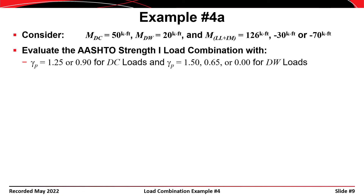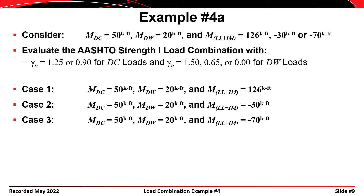Consider this example. The moment due to DC loading at a point is 50 kip-feet, and the moment due to DW loading at the same point is 20 kip-feet. The moment due to live load plus impact could be 126, negative 30, or negative 70 kip-feet depending on the truck position. We evaluate the AASHTO Strength I load combination using load factors of 1.25 or 0.9 for DC, and 1.5, 0.65, or 0 for DW. This creates three different load cases.